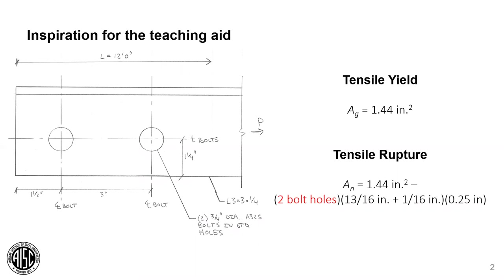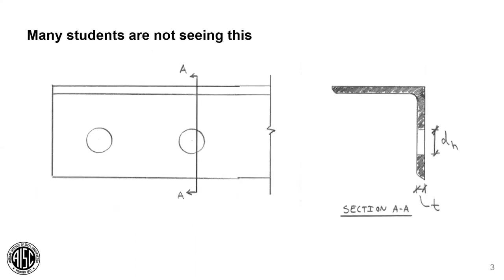I see too many errors like this in my introductory steel design course, where the students subtract out two holes to get the net area, when they should only subtract out one. When students are starting out, they don't necessarily have a feel for what the drawing is representing or the limit states they are calculating. They may have never seen up close a steel angle, let alone one with holes drilled through for bolts. All the necessary details are there in the 2D drawing, but the important cross section is perpendicular to the page, and that's a jump.